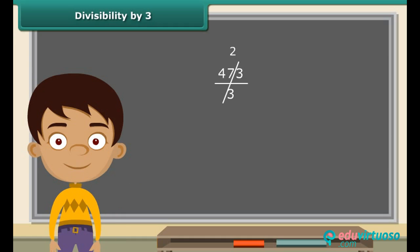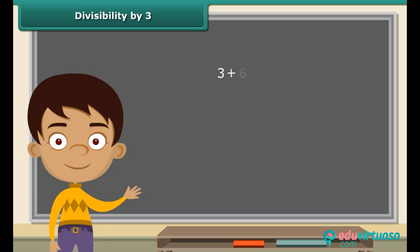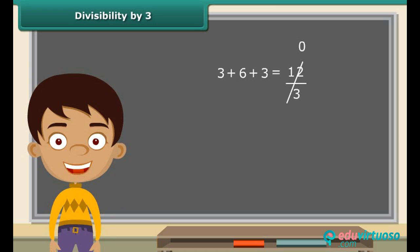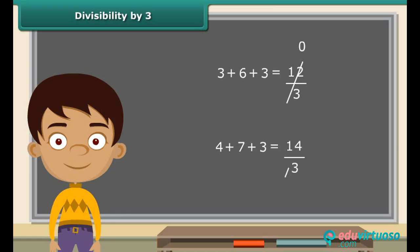To verify whether a number is divisible by three, add up the digits of the number. For example, to check if three hundred sixty-three is divisible by three, we add three, six, and three — we get twelve, and twelve is divisible by three. The digits of four hundred seventy-three sum to fourteen, which is not divisible by three. Therefore, if the sum of the digits of a number is a multiple of three, then the number is divisible by three.